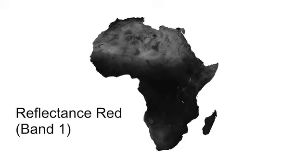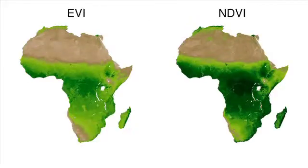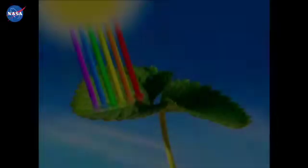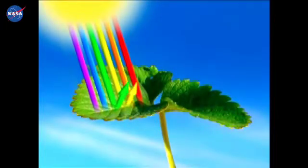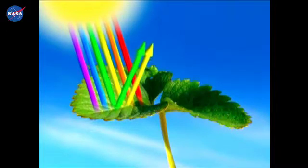The red band, located in the visible region, is highly correlated with plant growth and is an important variable in the calculation of both the enhanced and normalized difference vegetation index. In order to photosynthesize and grow, plants absorb different colors of light. Red light is the primary energy source that plants absorb for maturing, flowering, and seeding.